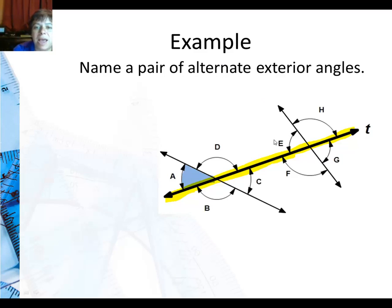Since it's alternate, I have to go under the transversal for my other angle. And it's exterior, so I cannot be between these two lines. It's not going to be B; I have to be all the way over here to angle G. So angle A and angle G are alternate exterior angles.